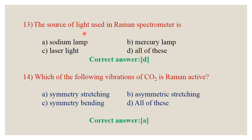Question number 13: The source of light used in Raman spectra — sodium lamp, mercury lamp, laser light, or all of these? The correct answer is D, all of these.